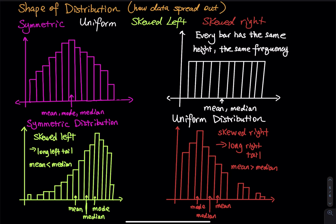That is why in a skew left distribution, the mean is less than the median. The median is near the middle but pulled a little off the center of the mountain by the low scores. The mean is always less than the median in a skew left distribution.